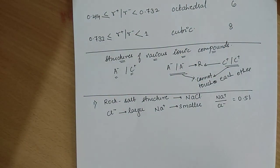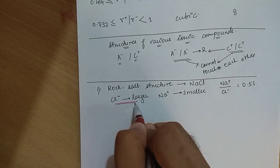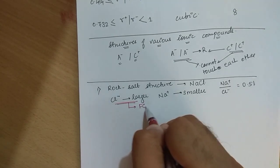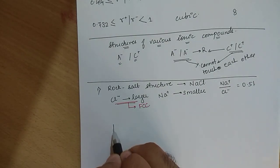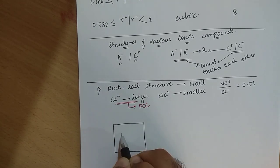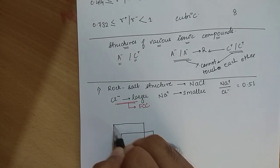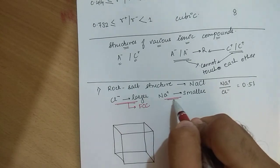Let's try to see how this structure is formed. The larger ions form an FCC structure — so Cl⁻ will form the FCC structure. The Cl⁻ ions form FCC structure, and the Na⁺ ions, being the smaller ions, will occupy the octahedral holes.